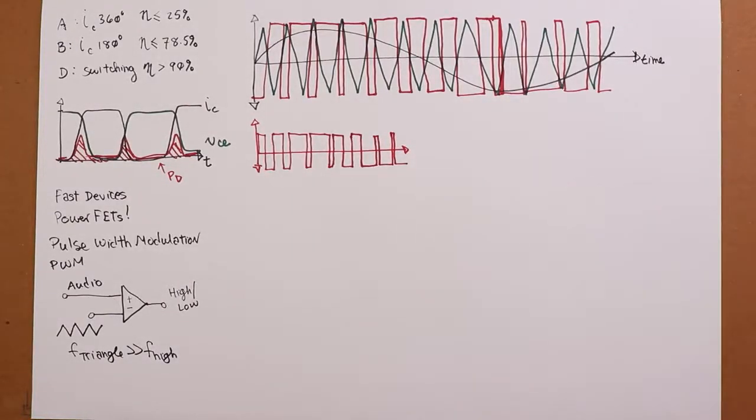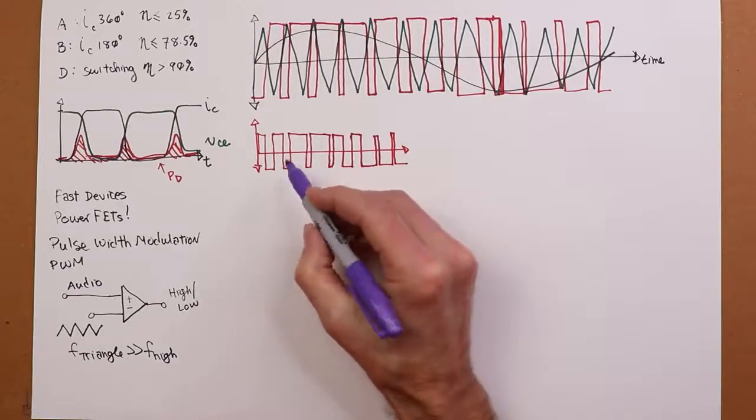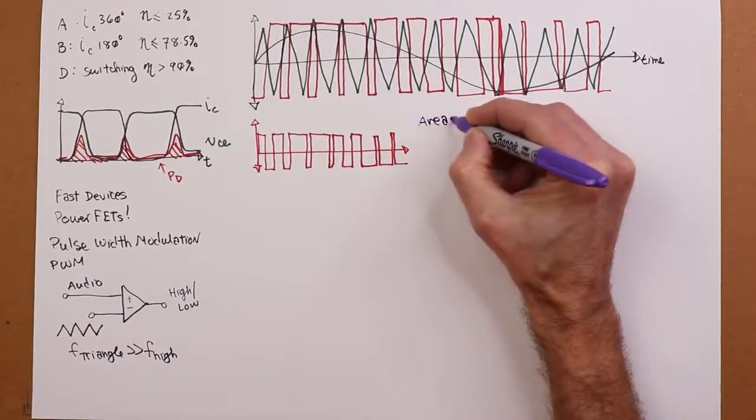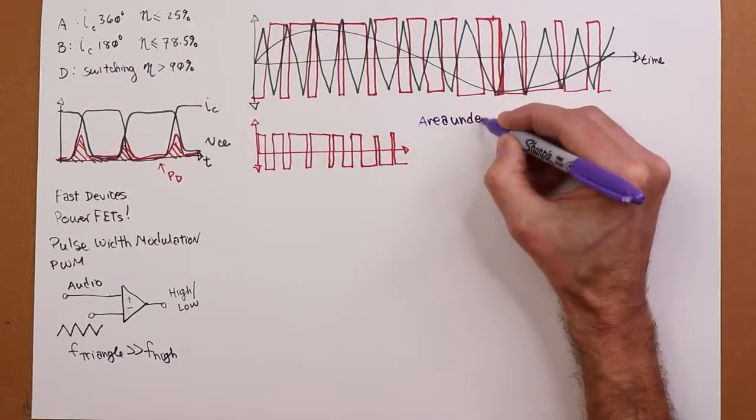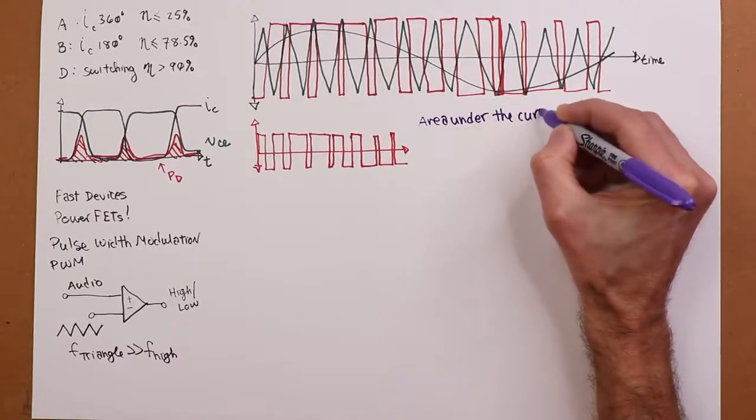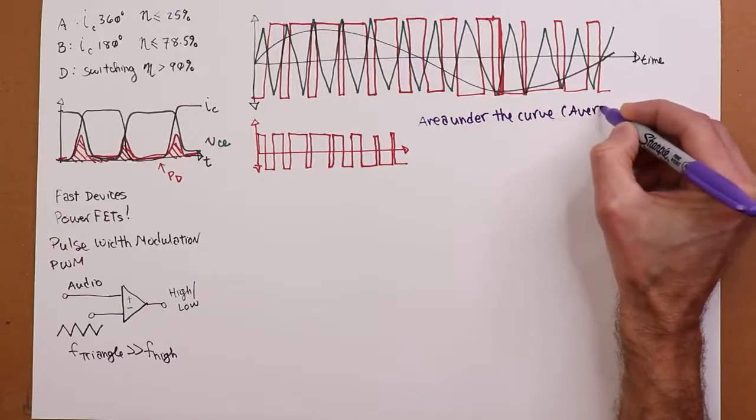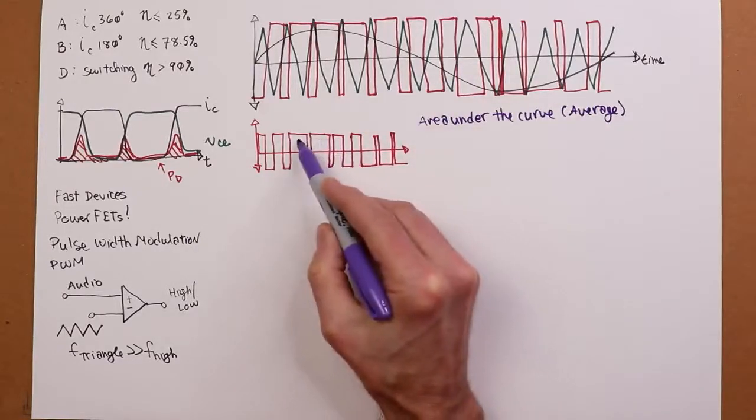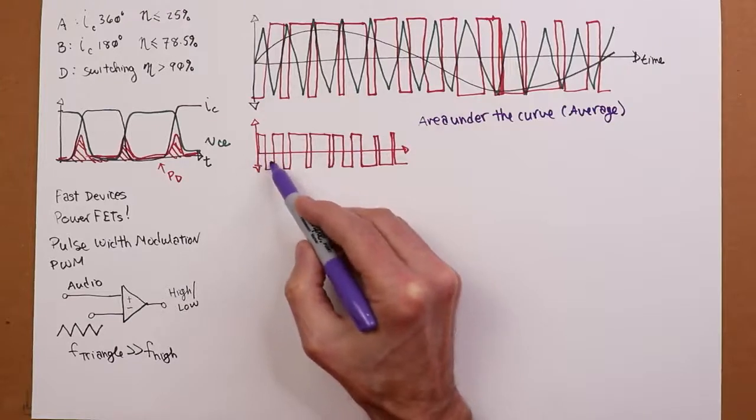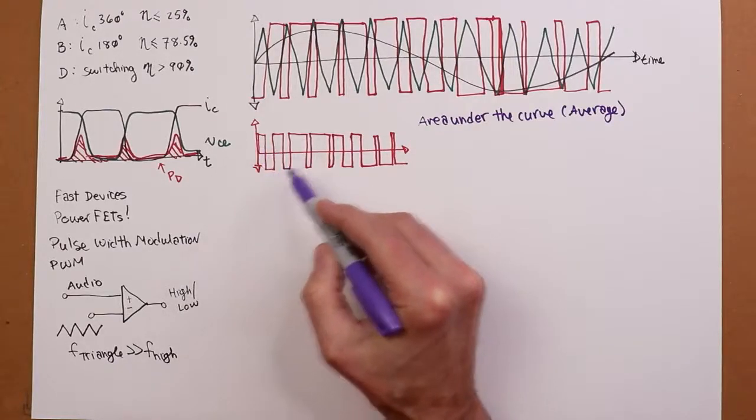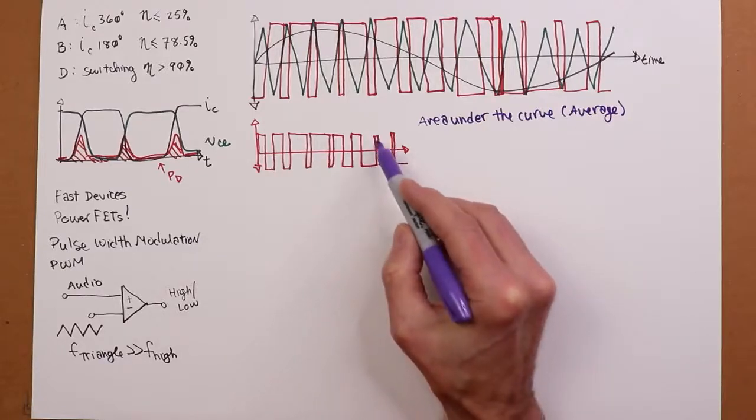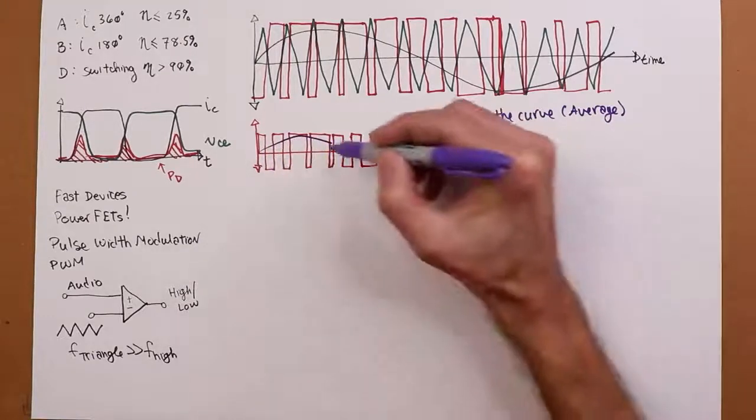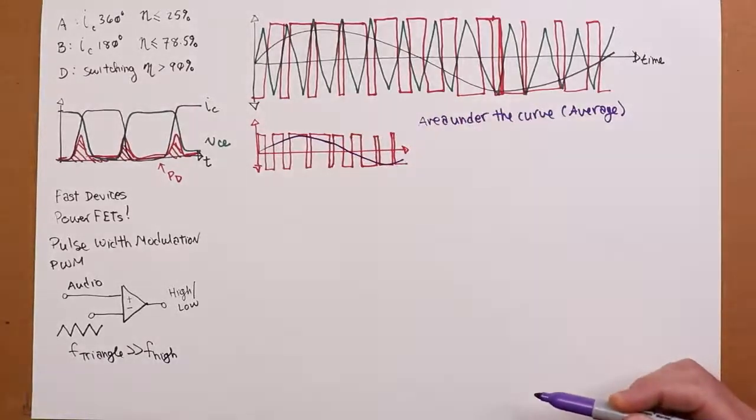When the signal is close to midpoint, close to zero, you're seeing pretty much a 50% duty cycle waveform. When it's pretty high, when it's positive, we see a really fat, maybe an 80-90% duty cycle. When it's negative, big negative value, we're seeing maybe like a 10 or a 20% duty cycle. So you might see something like this as the waveform works its way through.